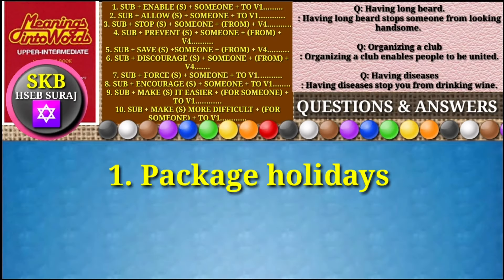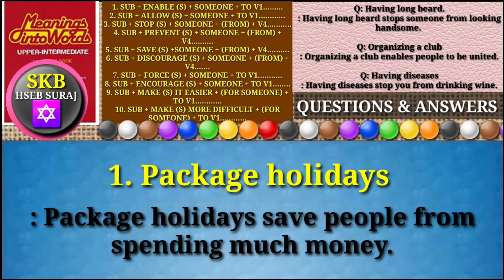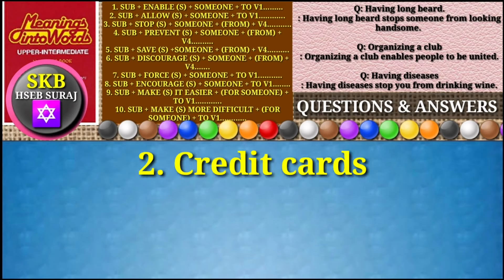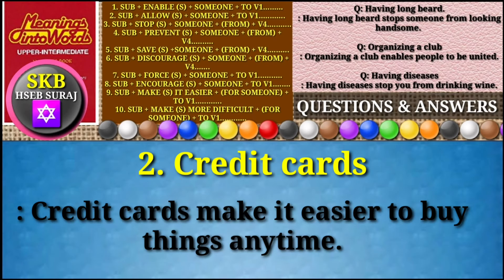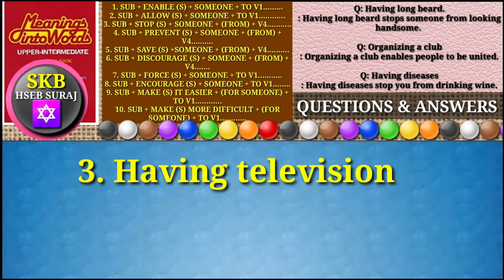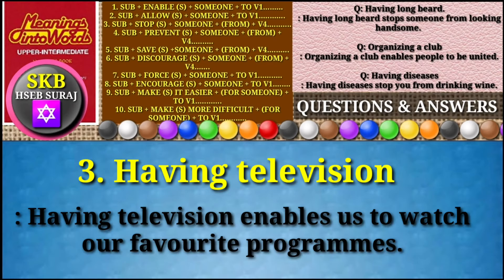Now presenting 8.2 Pros and Cons — single answer only. Question number one: 'package holidays.' Answer: Package holidays save people from spending much money. Question number two: 'credit cards.' Answer: Credit cards make it easier to buy things anytime.